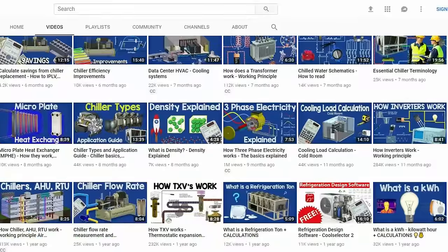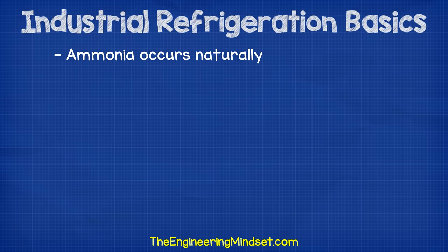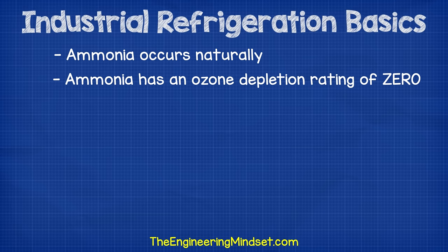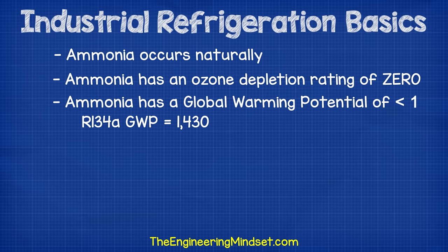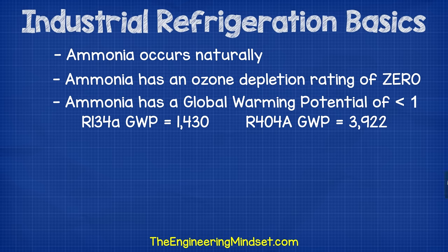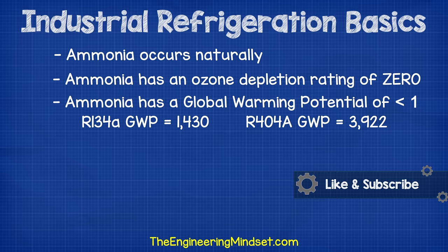I just want to very briefly touch on why we use ammonia as a refrigerant. Ammonia occurs naturally in the environment and is available in abundant amounts. It has an ozone depletion rating of zero and a global warming potential of less than one. If we compare that to other common refrigerants, such as R134A, which has a GWP of 1,430, and R404A which has a GWP of 3,922, you can see why ammonia is very beneficial to use.